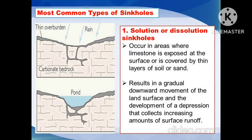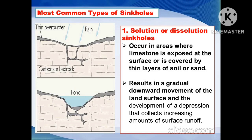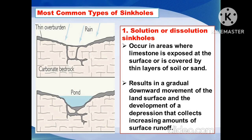The following are the most common types of sinkholes. Solution or dissolution sinkholes occur in areas where limestone is exposed at the surface or is covered by thin layers of soil or sand. This results in a gradual downward movement of the land surface and the development of a depression that collects increasing amounts of surface runoff.